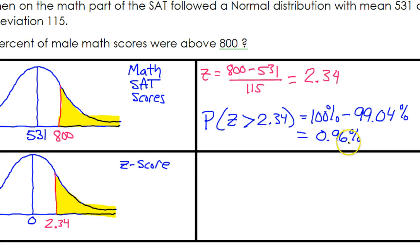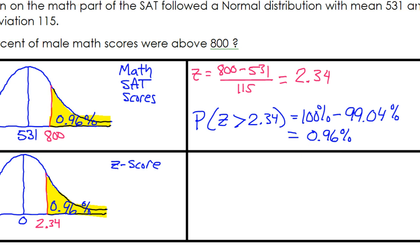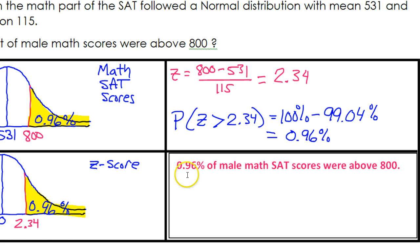Then just do that subtraction. So I'm getting 0.96%. So that's really close to 1% of the people that took the SATs got over 800 on the math part. It's one out of just about one in every 100 people. Let's record that on the picture, 0.96%. And finally, let's record our final answer in words. 0.96% of male math SAT scores were above 800.